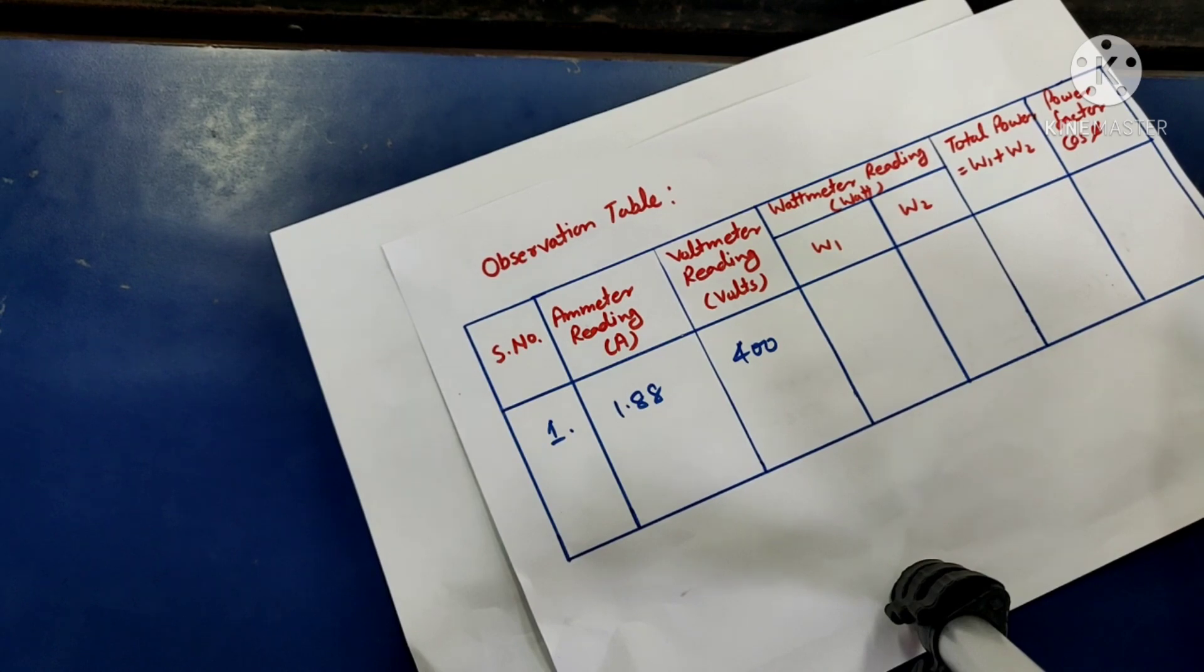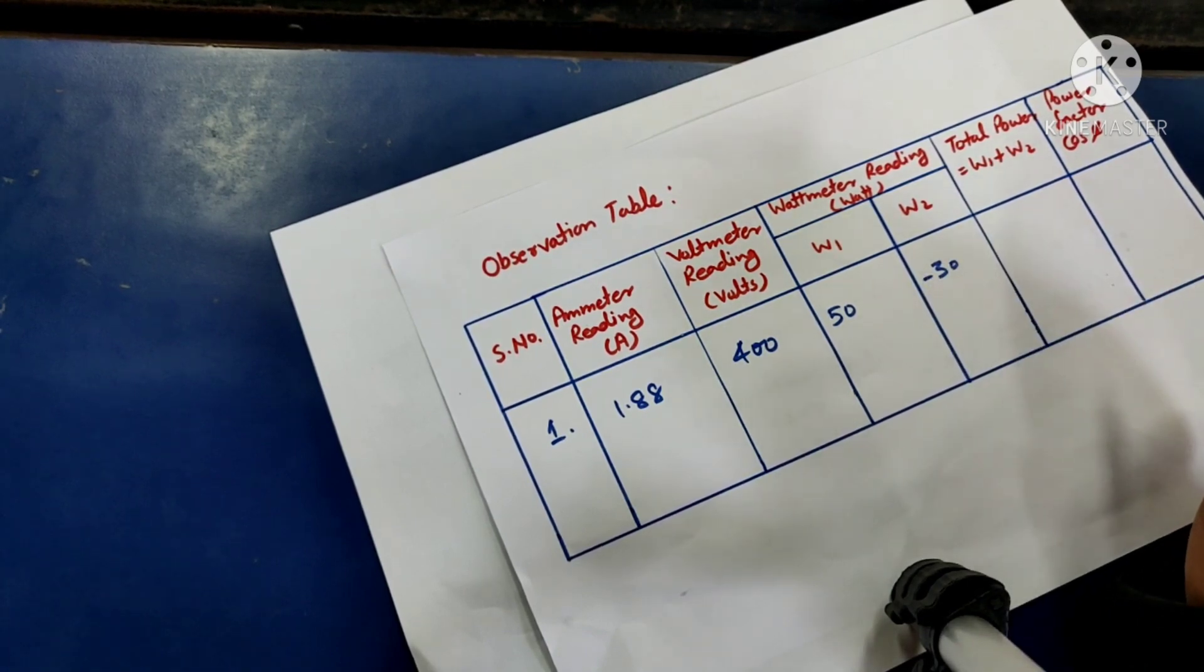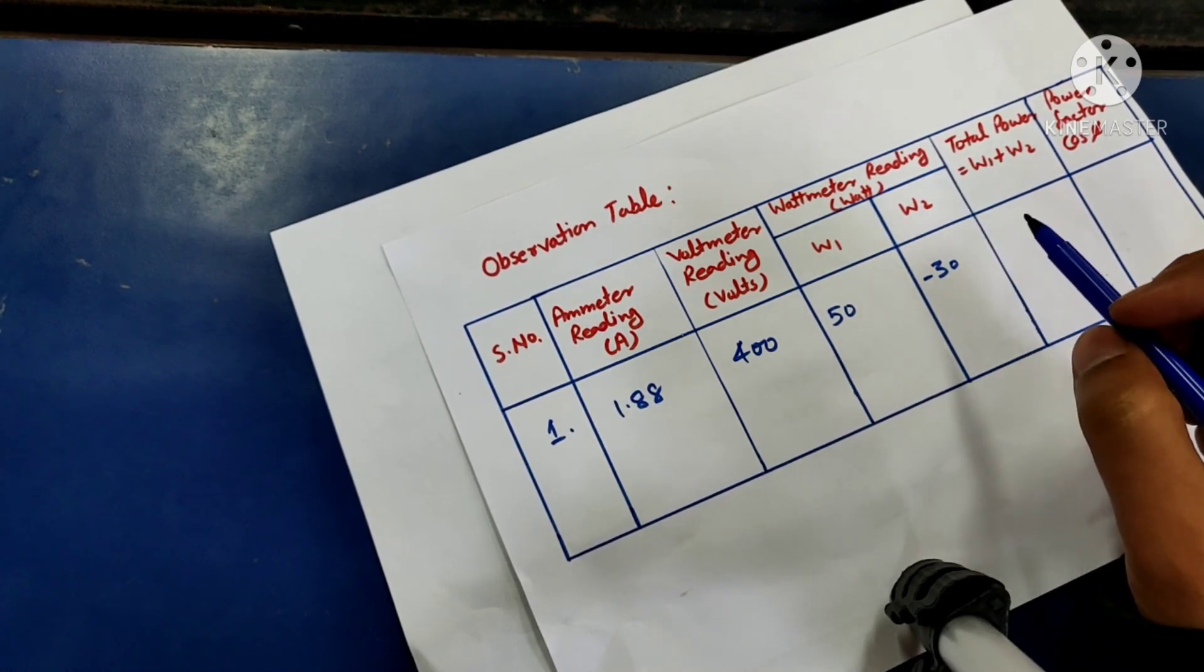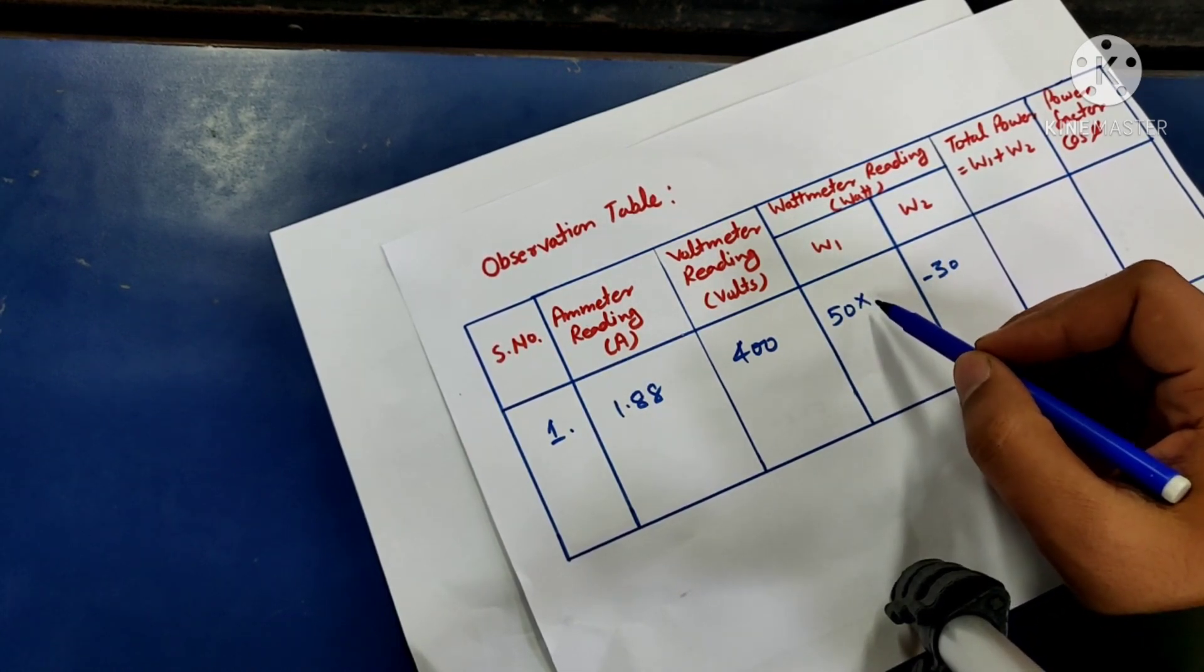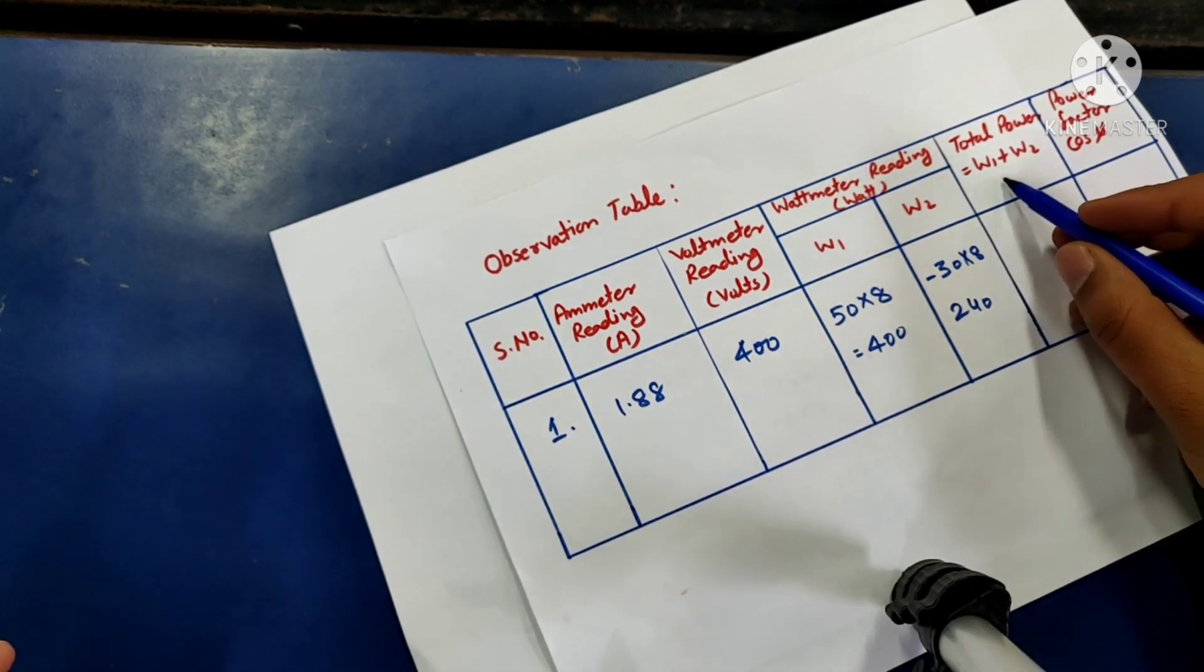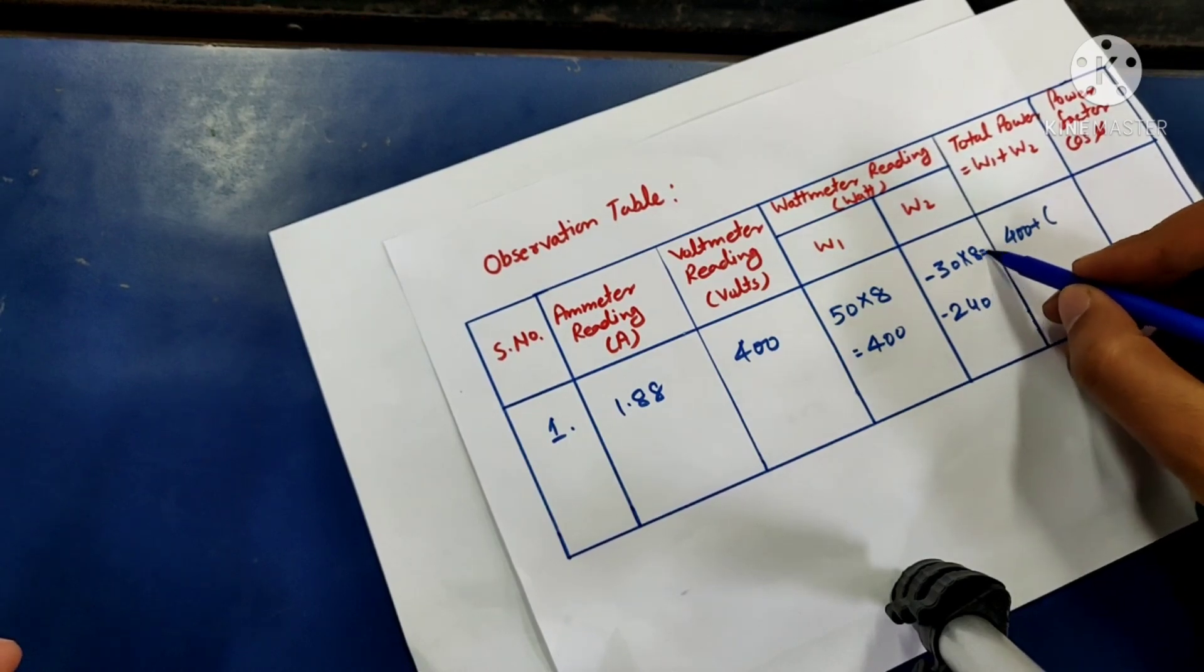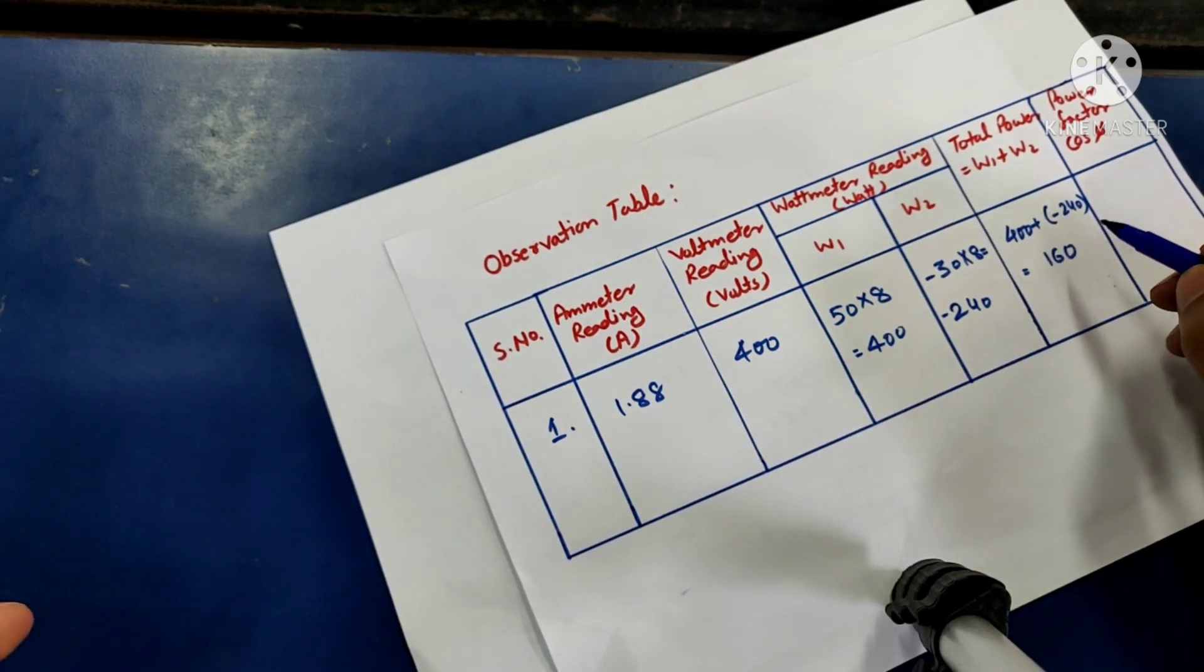So the readings provided by wattmeter one and wattmeter two were 50 and 30 watts respectively, and we will consider 30 as minus 30 because we have interchanged the connections of that wattmeter. In addition to the readings provided by the pointer of the wattmeter, we also need to multiply it with the multiplication factor of that wattmeter, which is 8. So the total power consumed by the load would be W1 plus W2, which is 400 plus minus 240, which gives us 160 watts of power.